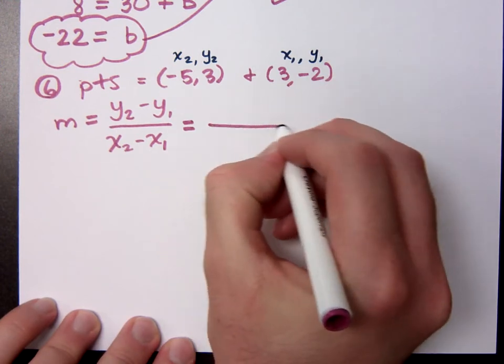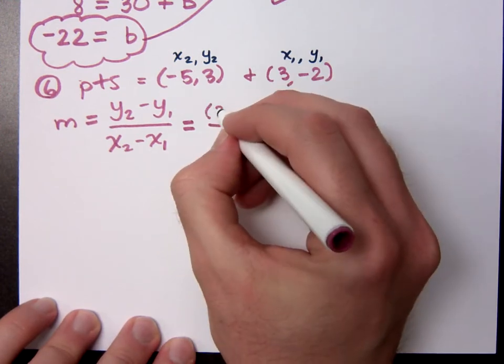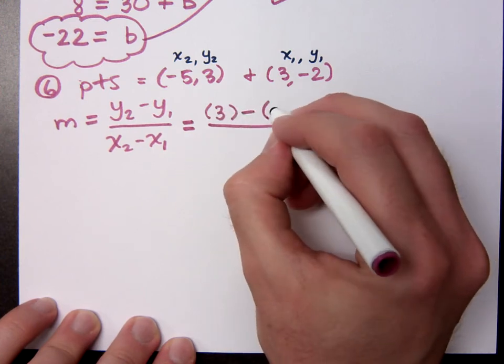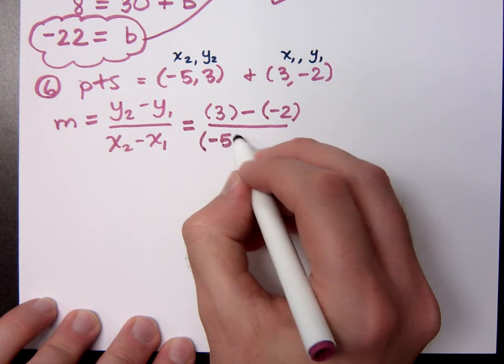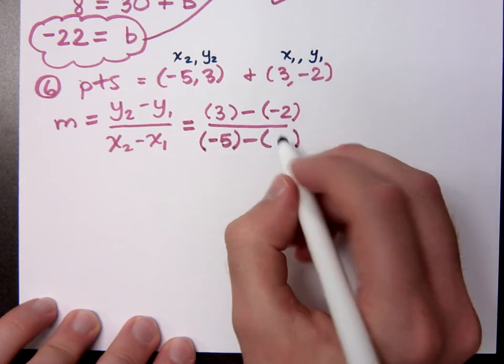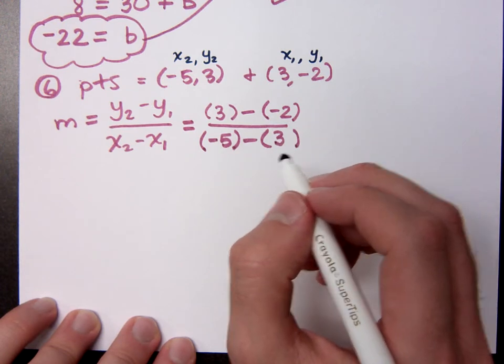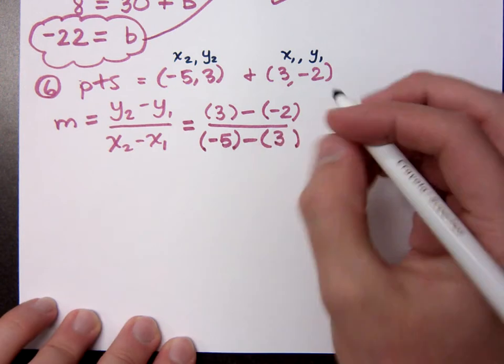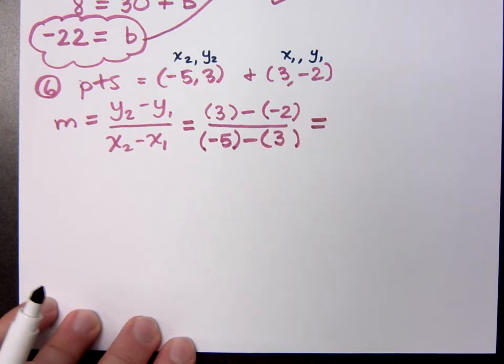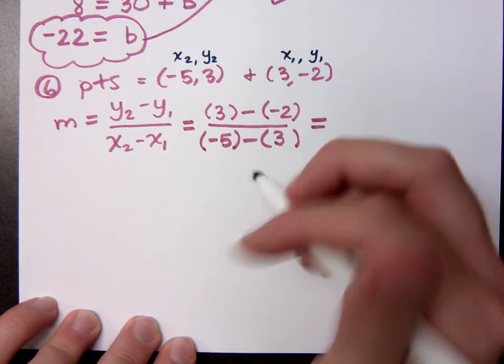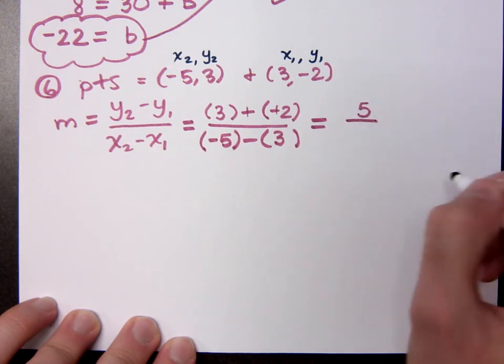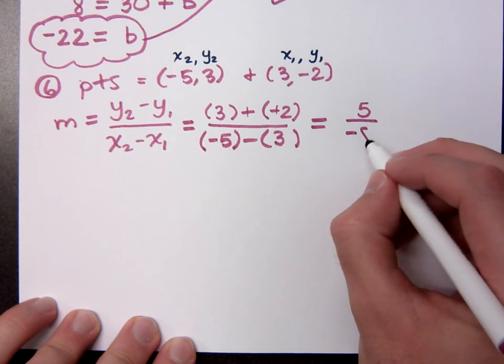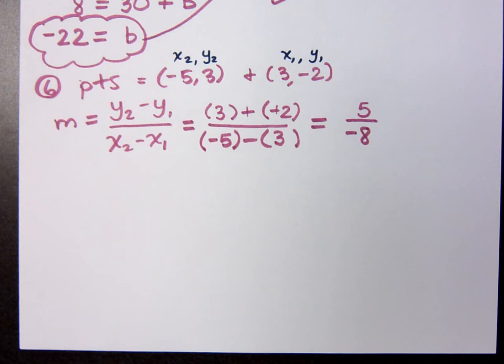So in this case, what's y2? y2 is 3. 3 minus what's y1? Negative 2. Got a lot of negatives, so pay attention here. x2 is negative 5 minus what's x1? x1 is 3. So what do you get in the numerator? We get 5 because minus and minus becomes a positive. Positive. And what about in the denominator? You get negative 5, and it's going to be a minus 3, so it's a negative 8.